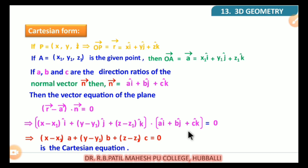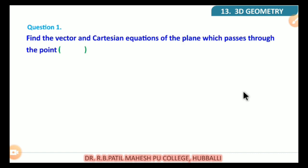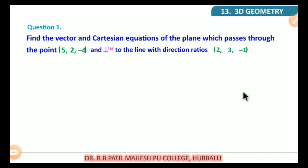Remember this whole derivation, students — both the vector and Cartesian forms will be asked in your annual examination for 5 marks. Now we start problems on this. Question number 1: find the vector and Cartesian equations of the plane which passes through the point (5, 2, -4) and is perpendicular to the line with direction ratios 2, 3, minus 1.